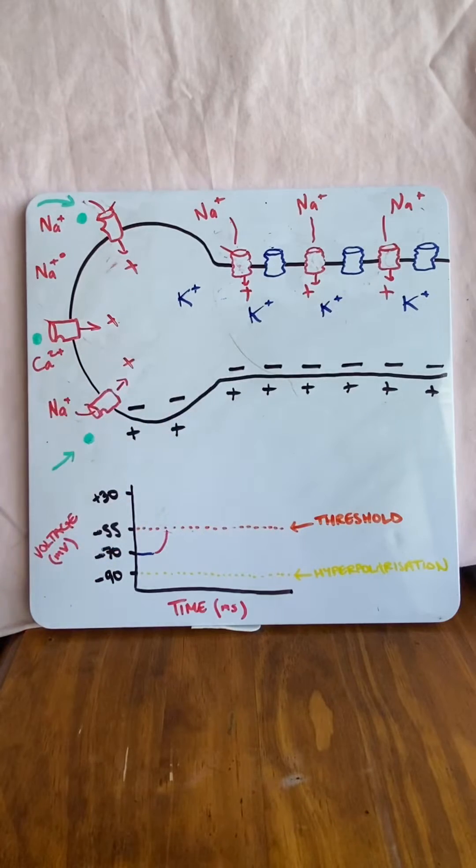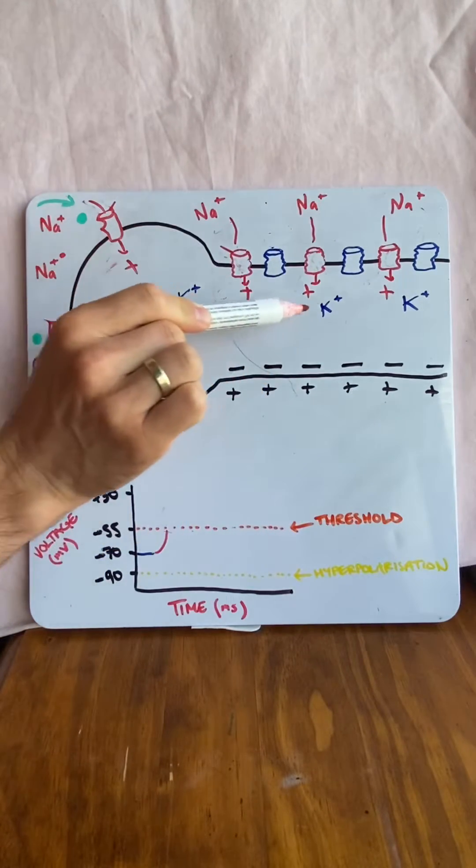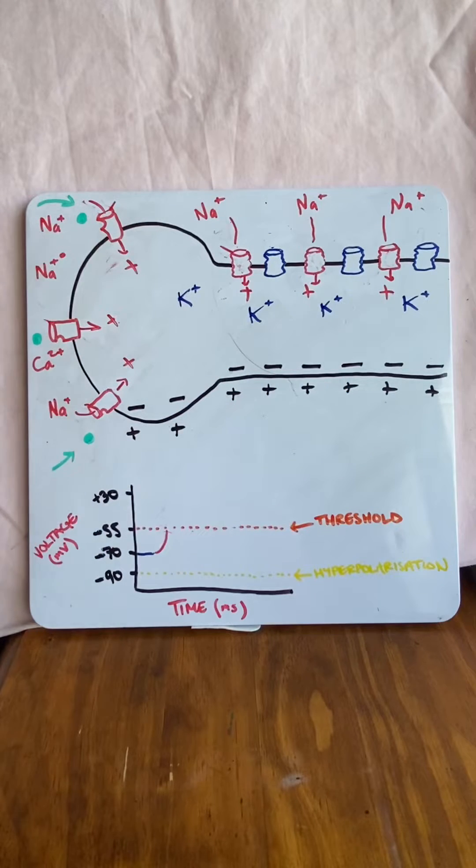And what you can see is a domino-like effect of positive sodium moving into the neuron, going down the neuron. This is simply the action potential. This is the signal that's being sent by all the neurons of our body.